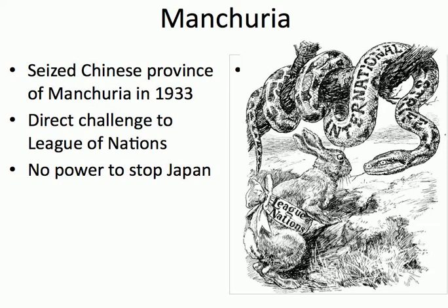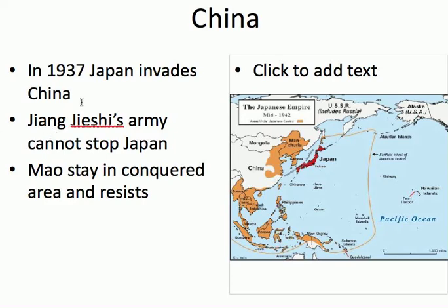They knew China was involved in a civil war between Jiang Zixi and Mao Zedong. So they go into Manchuria in 1933. This was a direct challenge to the power of the League of Nations, but in reality the League had no power to stop Japan. Here's a good political cartoon — the bunny represents the League of Nations, and the boa constrictor represents international conflict. Not the League of Nations, because it's just a weak little bunny. In 1937, Japan invades China proper — they were up in Manchuria and then move into China itself. Jiang Zixi's army cannot stop Japan, but Mao Zedong stays in certain areas and resists using guerrilla warfare against the Japanese, which makes him even more popular with the peasants.